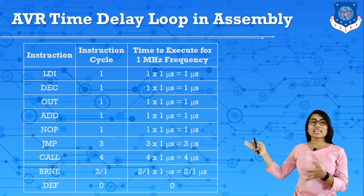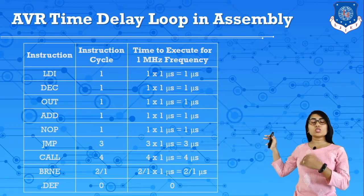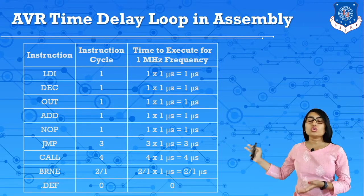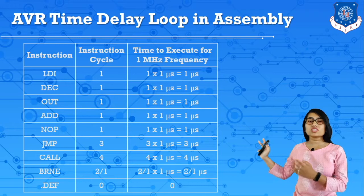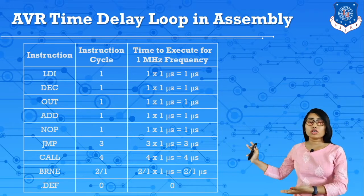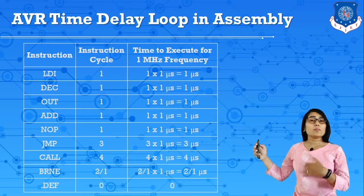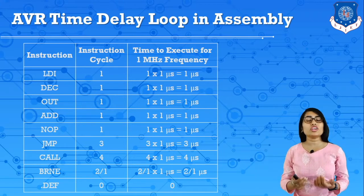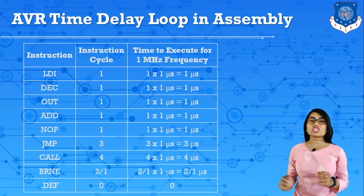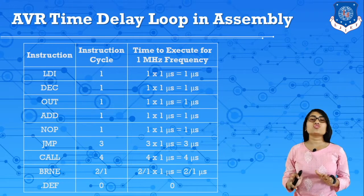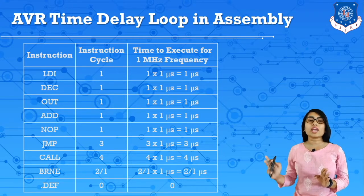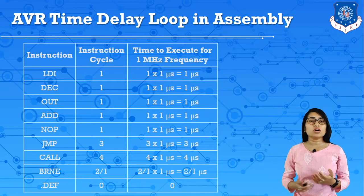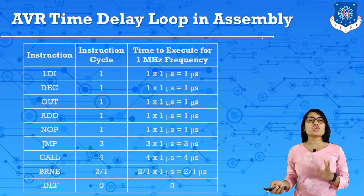For LDI, DEC, OUT, ADD, and NOP instructions, it requires 1 microsecond. For jump instructions, time required is 3 microseconds. For CALL, it requires 4 microseconds. For conditional branch instructions (BRNE), it requires either 2 microseconds or 1 microsecond depending on whether the condition is satisfied or not. Pseudo instructions or directives do not generate any machine cycle, so there is no time calculation for directives. Using these calculations, we can generate a time delay loop.